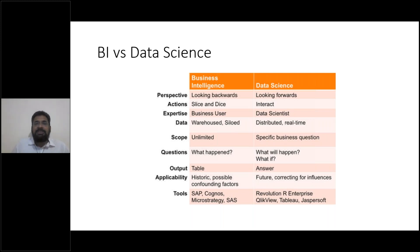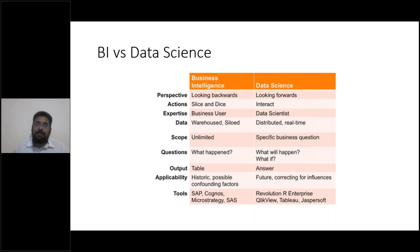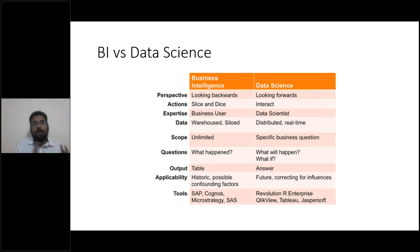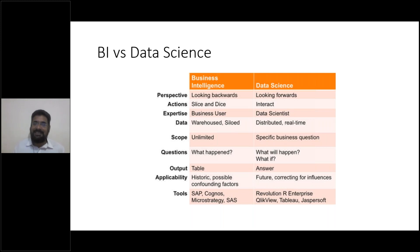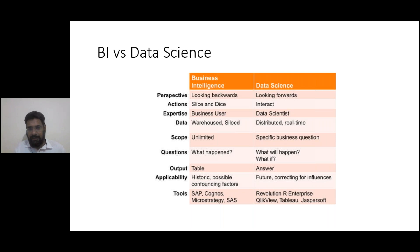In business intelligence we used to do something called slicing and dicing. Today we interact with data. I'll demonstrate these two things as we go along in the sessions ahead. Today, BI and data science are no longer separate applications — the same tools do both. They look backward, analyze past records, and allow you to predict what's happening in the future. The expertise required has evolved too — a manager or accountant used to be the expert telling you what to do by looking at the past.